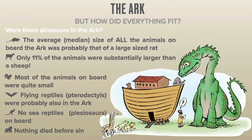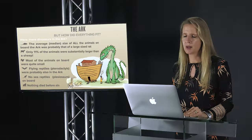The average median size of all animals on board the ark was probably that of a large rat. Only 11% of all animals on the ark were substantially larger than a sheep, meaning most were quite small. Flying reptiles such as Pterodactyls were probably also in the ark, but of course no sea reptiles such as Plesiosaurs.